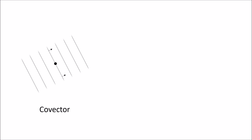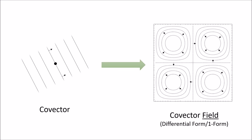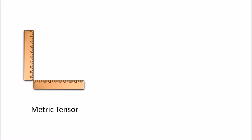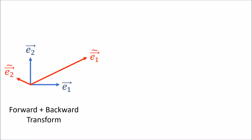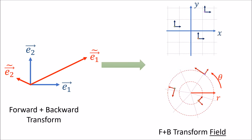For example, instead of considering individual co-vector stacks we consider co-vector fields, also called differential forms or one-forms, where a different co-vector exists at every point in space. Instead of a single metric tensor that works everywhere, we might consider a metric tensor field where the metric tensor changes from point to point. This is useful when we have a map of the Earth projected onto a flat plane — because the Earth is a sphere, projection always leads to distortion, so we need the correct metric tensor for each region to measure sizes correctly. In tensor calculus we also consider basis vector fields where the basis vectors change from point to point everywhere in space.